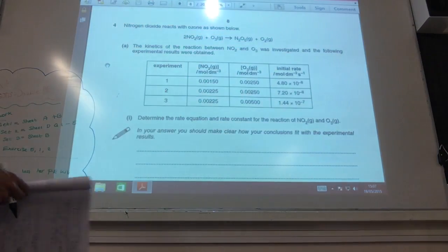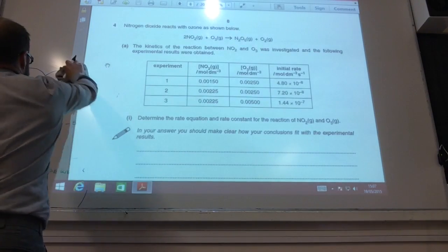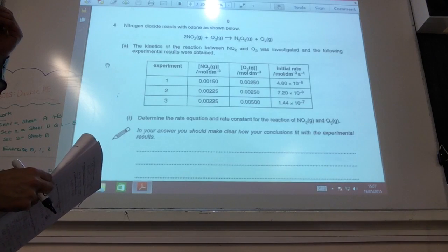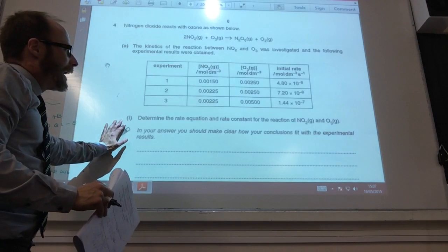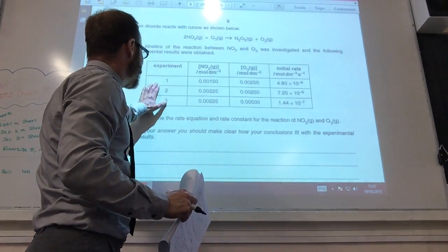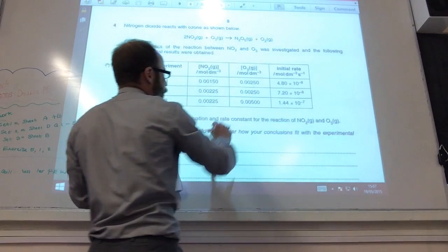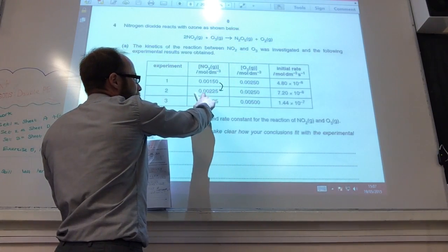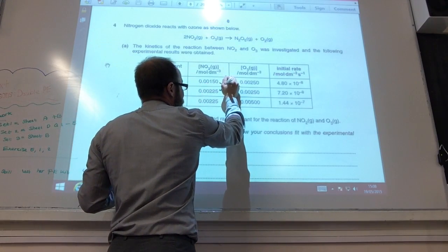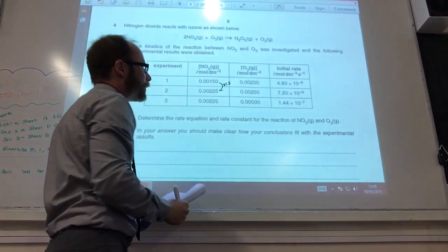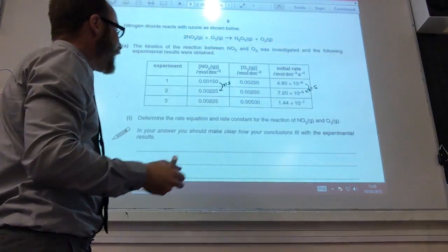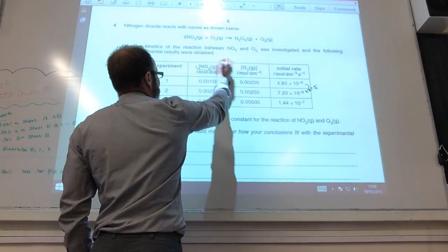Okay, so we're now answering some rates questions. So, nitrogen dioxide reacting with ozone. Kinetics have been investigated, and it wants me to determine the rate equation and the rate constant for this reaction. So, best way to tackle this, let's tackle it in experiments 1 and 2. Hopefully you can see ozone concentration stays the same. If in your calculator you do 0.00225 divided by 0.0015, you will find that that comes to, you have times it by 1.5. If you do the same here, that has also increased by 1.5. Therefore, it's first order with respect to NO2.